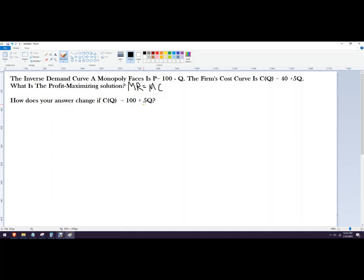How does your answer change if you have this other total cost function? Okay, so what they're looking for is actually a price, a monopoly price, and a quantity.